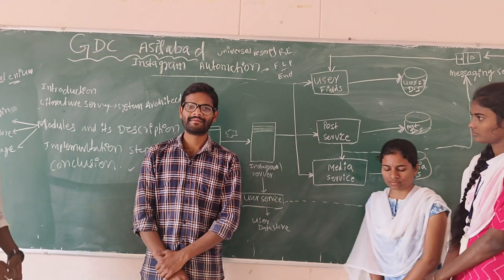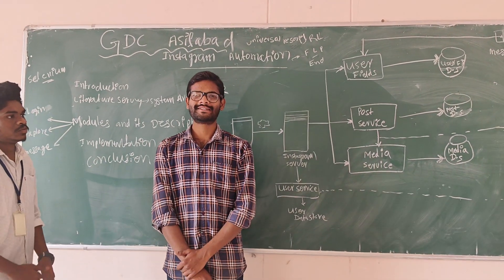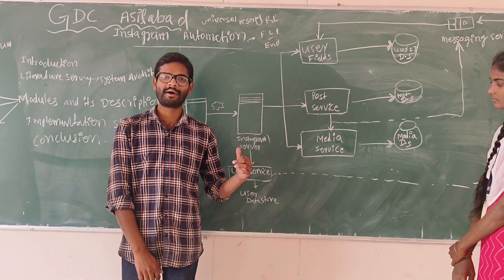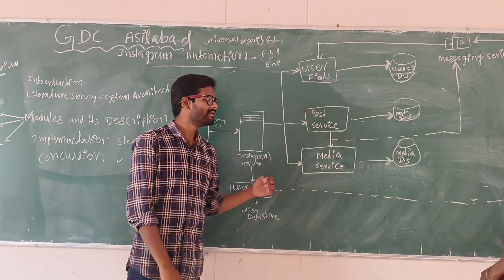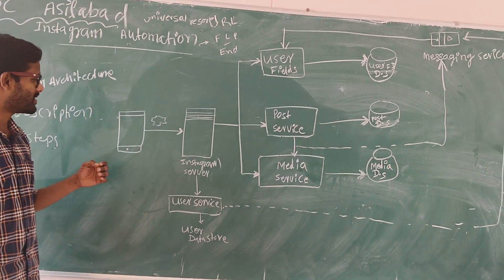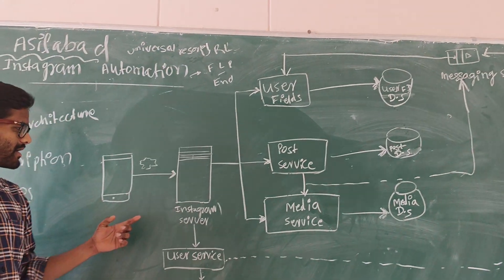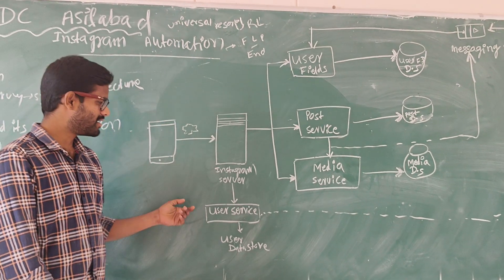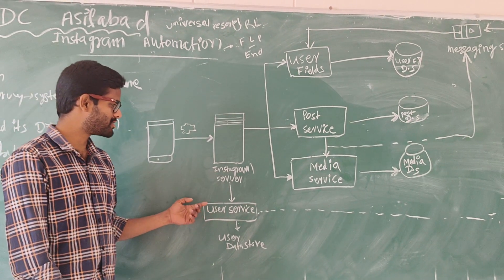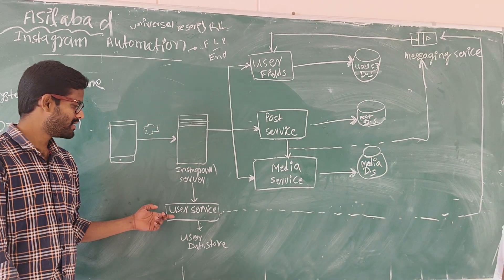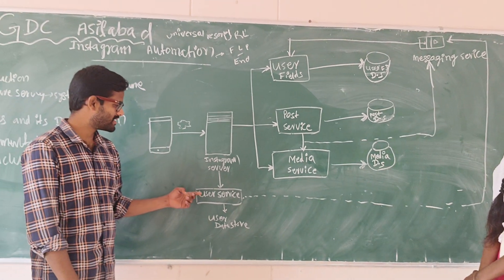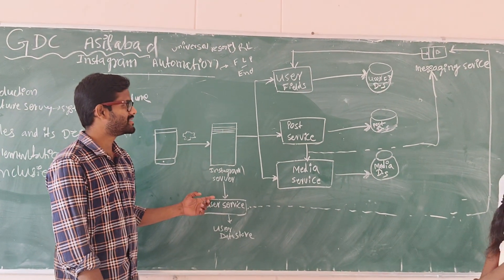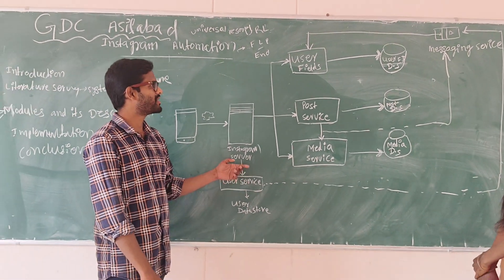My name is D. Rajenekand. My part is the system of pictures in Instagram Automation. In this Instagram Automation, from the Android platform, users will communicate with each other using the Instagram server.